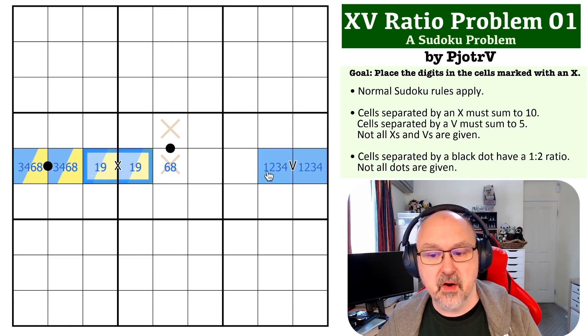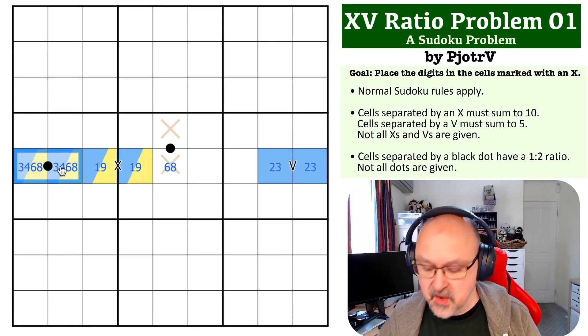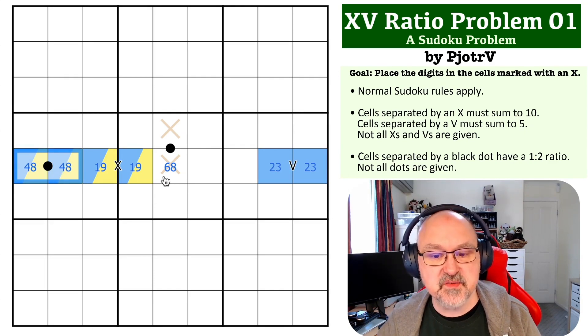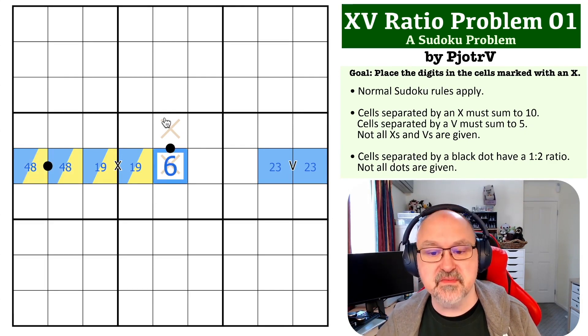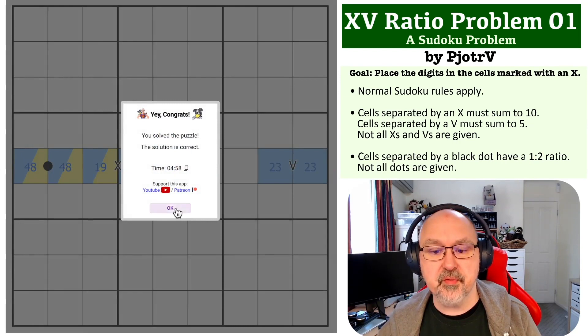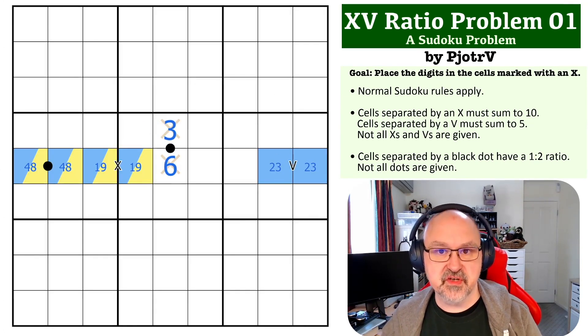So this must be one-nine, which takes one-four out of there, this becomes two-three, which takes three-six out of there, this becomes four-eight, this becomes the six, this becomes the three, and that is the solution to the problem.